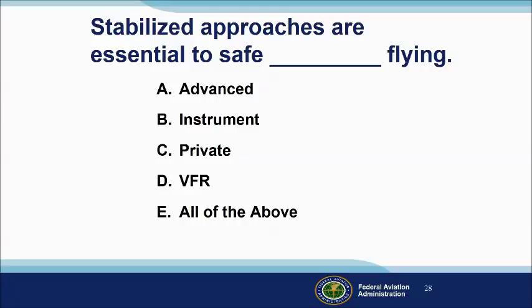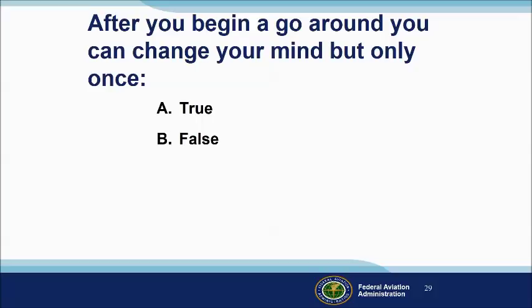For a quick review: stabilized approaches are essential to safe flying — for instrument and VFR pilots alike, whether you're an airline pilot with thousands of hours or a private pilot just starting out. The answer is all of the above. After you begin a go-around, you should not change your mind; changing your mind and trying to complete a landing after starting a go-around is destabilizing. You're better off completing the go-around and returning for another landing attempt. The answer is false.